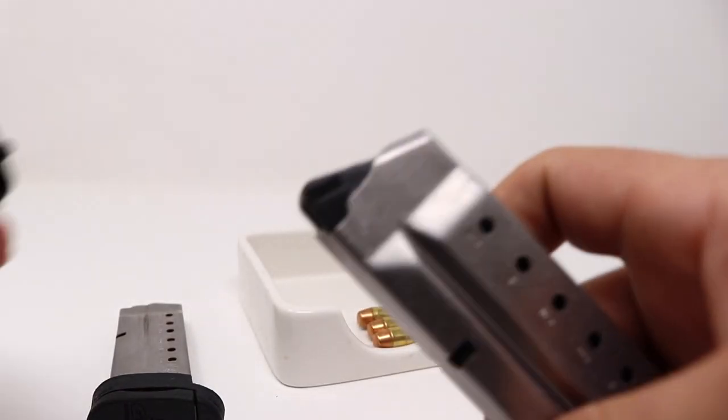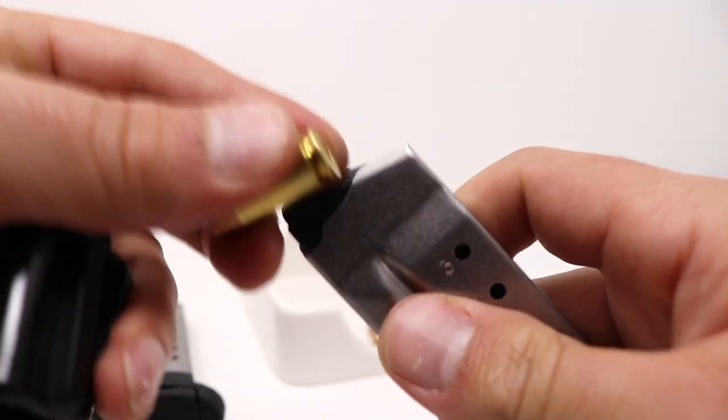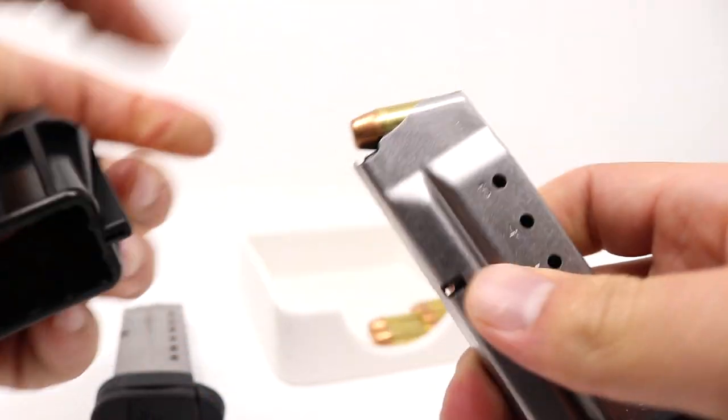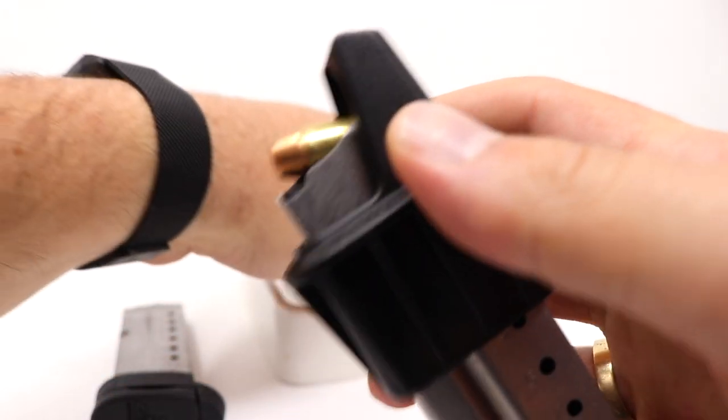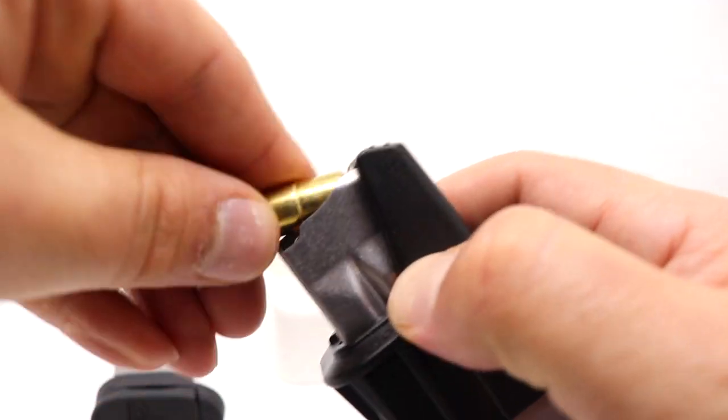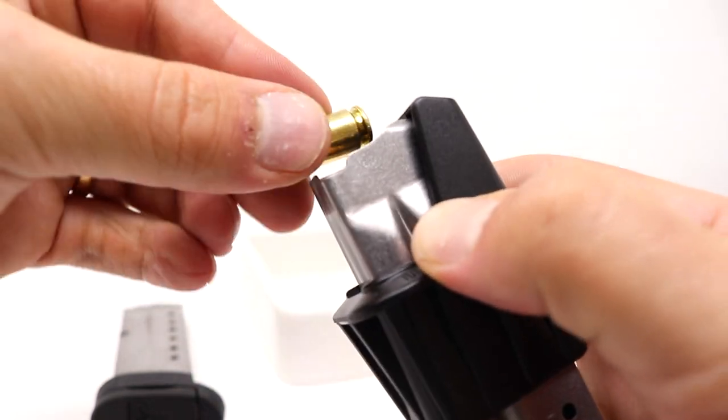Do the same thing again for the 40. We'll put in one round to start. And this is the Shield 2.0 in 40 cal. Just push down and insert. This one only holds 6.